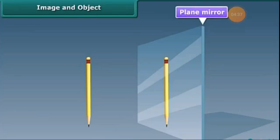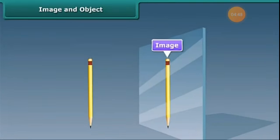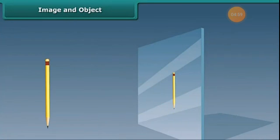Now we are going to learn about image and object. Take a plane mirror and place a pencil in front of it. The pencil which appears behind the mirror is called an image. You can see on the screen, the image is behind the mirror, and the pencil itself is called an object. What happens when we place the pencil in different positions in front of the mirror?